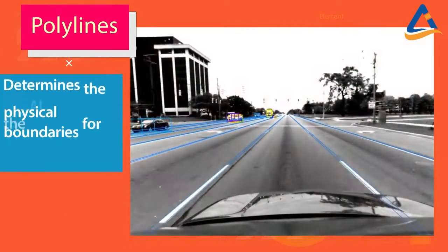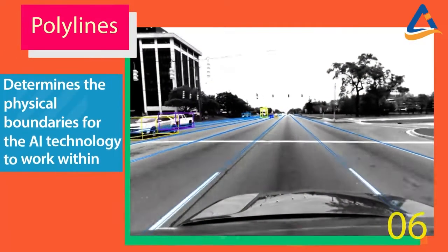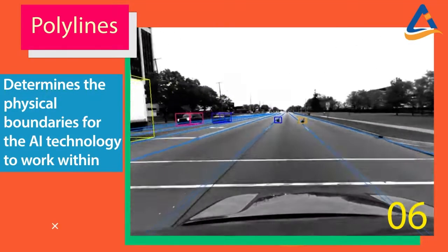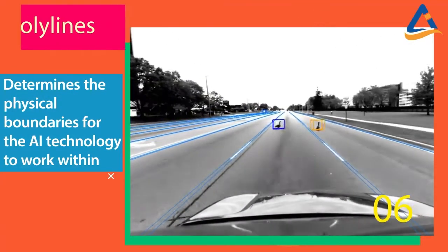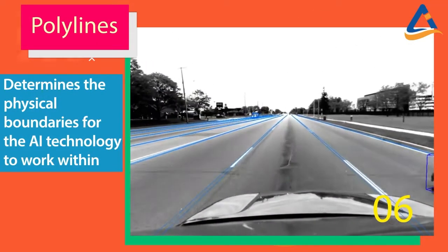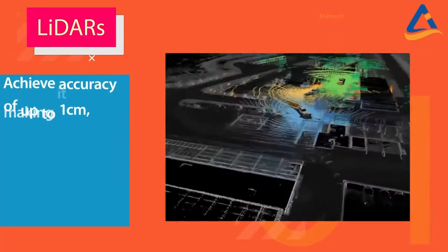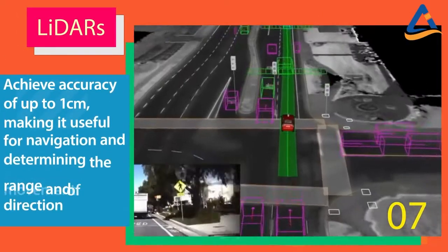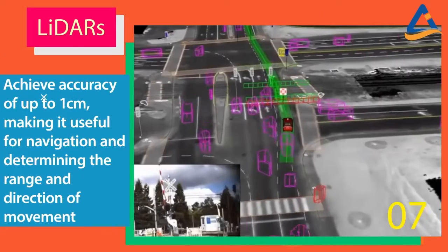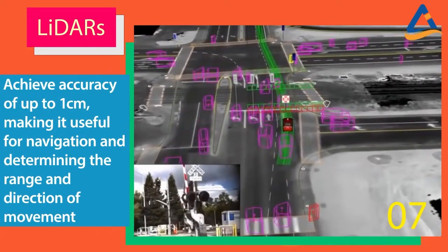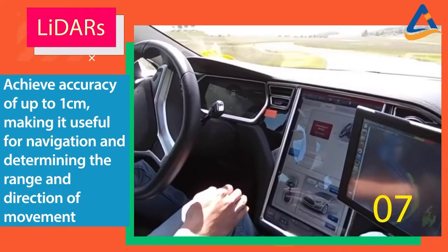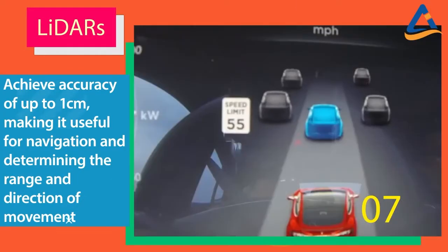Polyline annotation determines the physical boundaries for the AI technology to work within, such as lane detection for self-driving cars. Annotating 3D point clouds of LiDARs can achieve an accuracy of up to 1 cm, making it useful for navigation and determining the range and direction of movement.